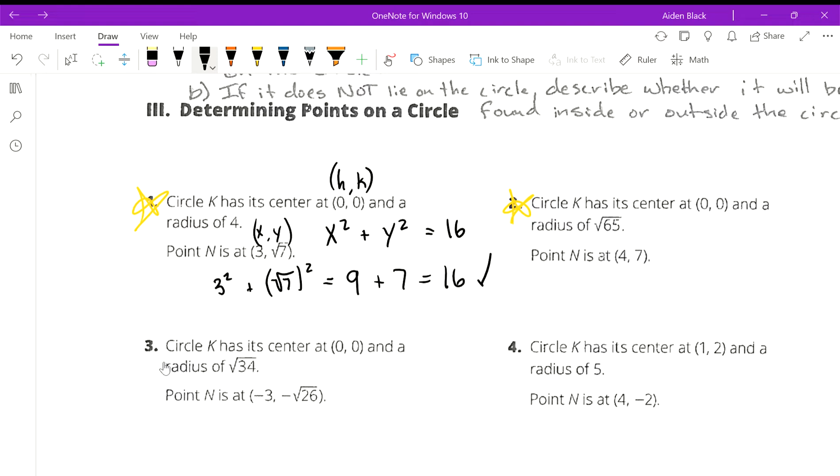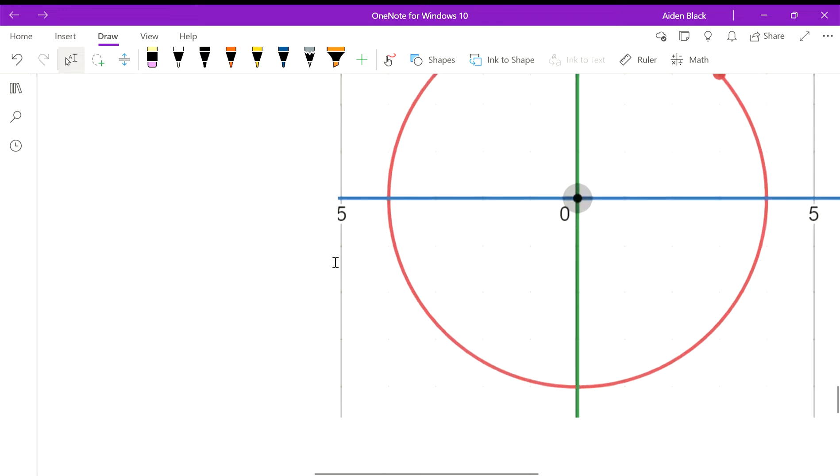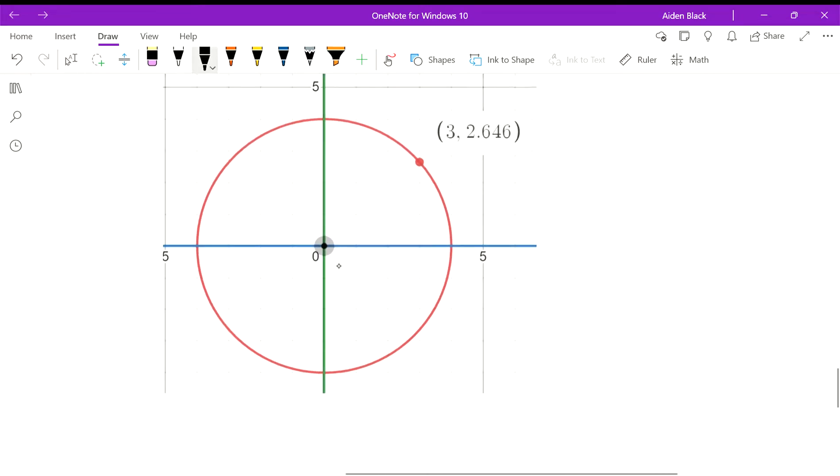You can see I put in the point 3 comma square root 7. Here it is right there. And we want to find another point. Now the idea here is we can look at the distance from the x-axis to that point. We can look at the distance from here to the x-axis. That is our y value, right? That's square root 7. So all we have to do is go directly down where x equals 3. So our point down here should be 3 comma, and if that distance from the x-axis, which is our line of symmetry here, is square root 7, this must also be square root 7.